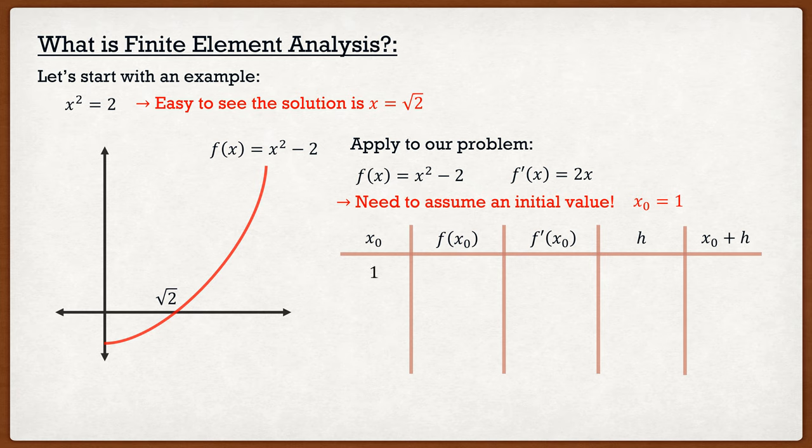So if we assume x₀ = 1, then I can calculate f(x₀). We just substitute 1 into the equation x² - 2. We get a value of -1. From there, we can also find the value of f'(x₀). By again, just substituting 1 into the equation 2x, we simply get 2. From there, we can calculate h because h is simply -f(x₀) / f'(x₀). We get 0.5, and we get x₀ + h is simply 1.5. Nice and simple.